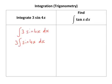And then what differentiates to sine? Cosine differentiates to minus sine. So I'm going to have a minus cosine of 4x.